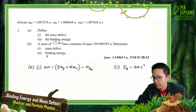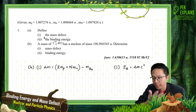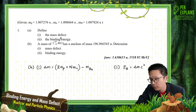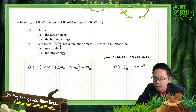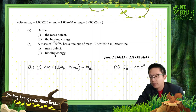Question A asks to define mass defect and binding energy — you can find these in the lecture notes; I already explained them in my previous video. Now let's look at question B: a mass of aurum has a nucleus of mass 196.966543 atomic mass units. We need to determine the mass defect and binding energy.